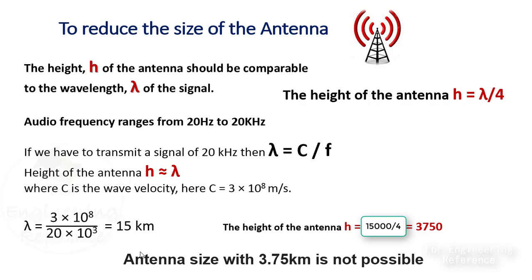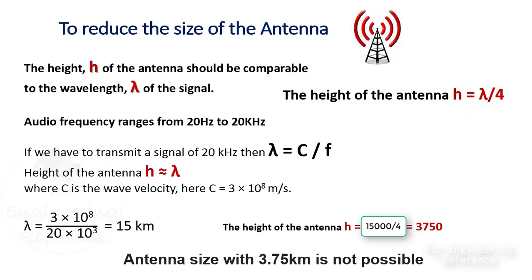For the effective transmission of a signal, the height h of the antenna should be comparable to the wavelength lambda of the signal. The height of the antenna h should be lambda by 4 in length at least, so that the antenna can sense the variations of the signal properly. The low-frequency message signal has a very high value of lambda, which will require a very high antenna that is practically not possible.